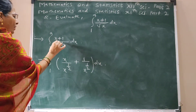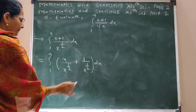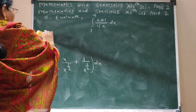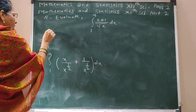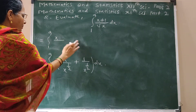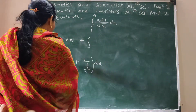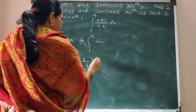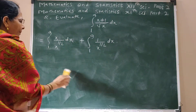Integration: x divided by x raised to half, plus 1 divided by x raised to half. Separate the integrations: from 1 to 9.